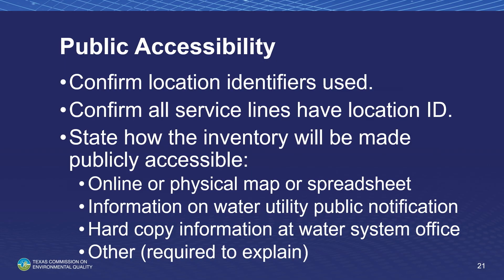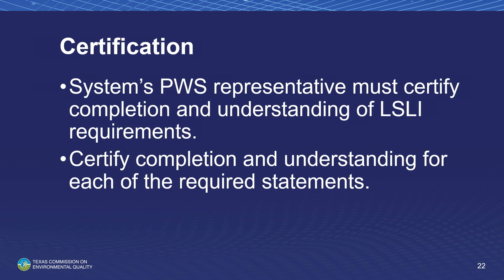For the public accessibility requirement, all systems must confirm the location identifiers used for each service line and that all service lines include a location identification. Systems must also state how the inventory will be made publicly accessible through one of the allowable methods. For the certification requirement, the PWS representative must certify under penalty of law that all information submitted for the LSLI is true and accurate to the best of their ability, certifying each required statement on form 20943 or the LSLI portal.